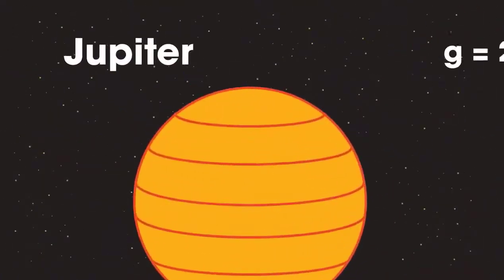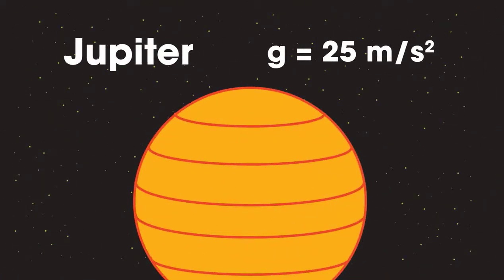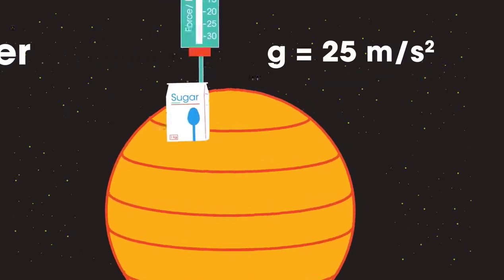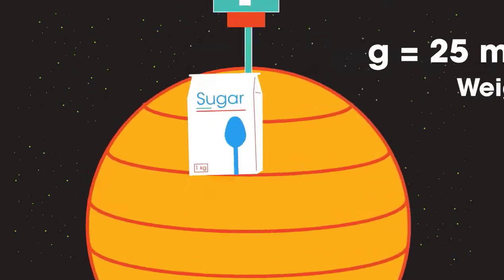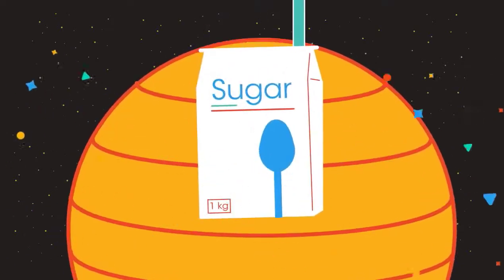Jupiter, the gas giant, has a G value of 25 meters per second per second. Can you work out what the force meter would show for the bag of sugar here, assuming there was a solid surface to stand on? The sugar now has a weight of 25 newtons. But don't forget, we still have 1 kilogram of sugar. That hasn't changed.